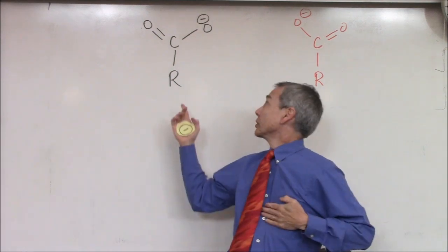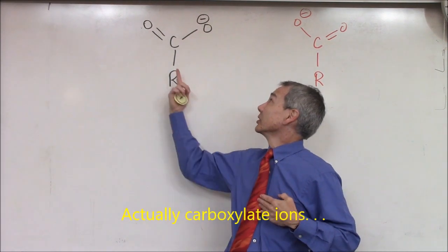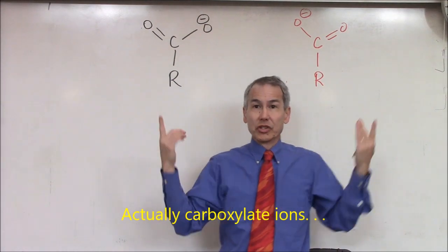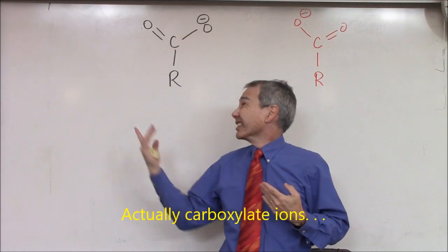In reality it's more complicated than that but this is a good beginner's guide to resonance. So here I have two forms of carboxylic acid, the black one and the red one, and these are called resonance structures. They can readily interconvert.